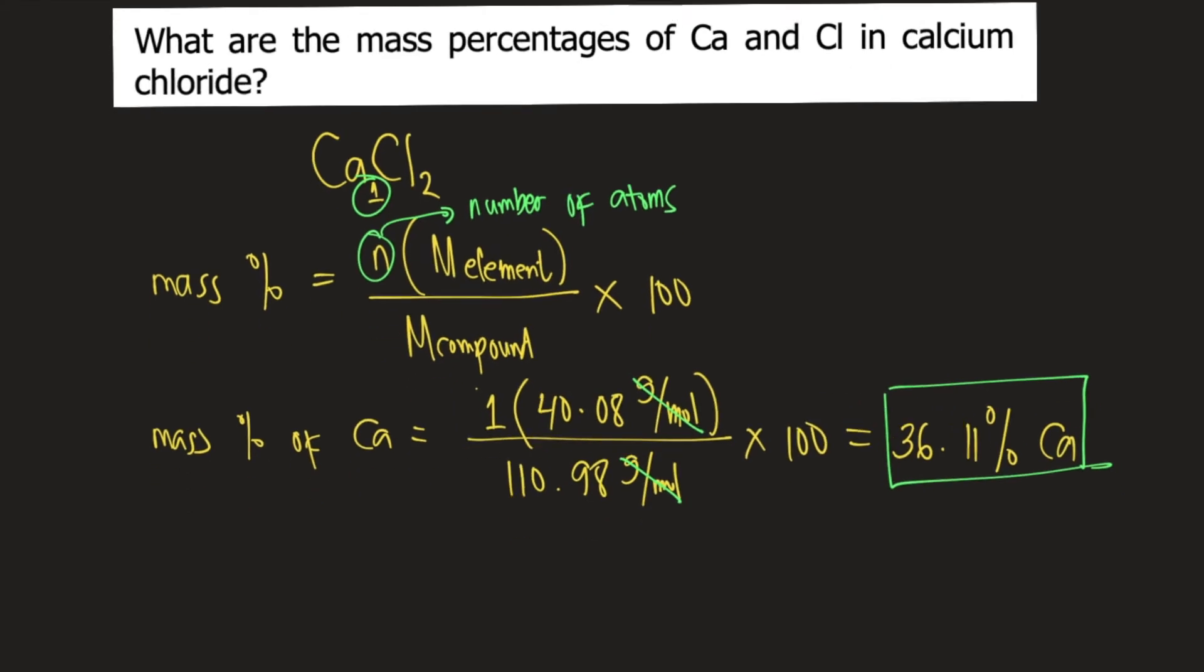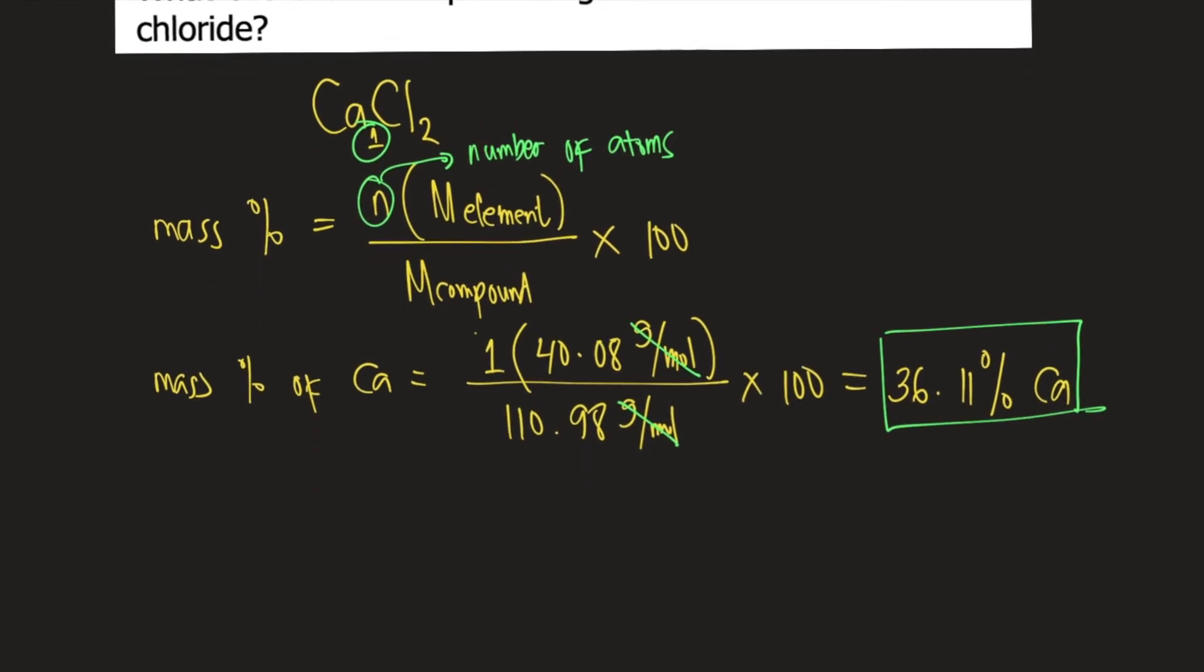Let's move on to chlorine. Mass percent of Cl is equal to, if you check the chemical formula, you have 2 Cl atoms, CaCl2.